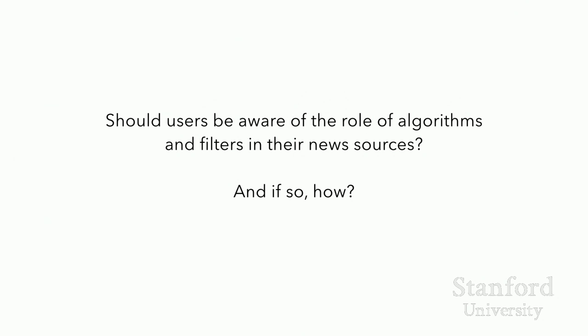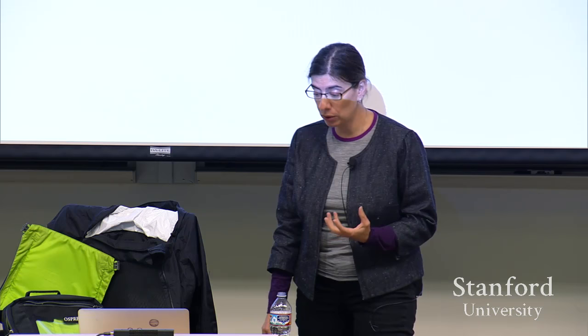In addressing how users might become aware, three general approaches have been used so far. First, people have been trying to undo the bias or prioritization in feeds — for example, always putting everything in most recent mode on Facebook. However, it's not clear that makes it unbiased, and what does it even mean to un-bias a Twitter feed from politics? Second is to make the viewer aware of the prioritization explicitly or abstractly — which is the approach we're embracing. Third is to allow the user to create their own prioritization algorithms. I'll talk briefly about the latter two.